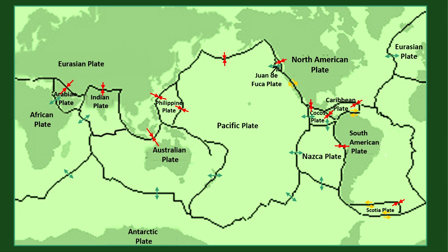For example, the Eurasian plate and Arabian plate move towards each other. Please categorize your answers according to the following plate motion: moving towards each other, moving away from each other, and sliding past each other. Are you ready? Go!